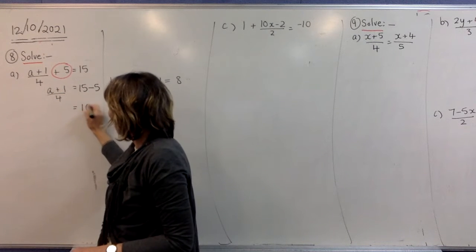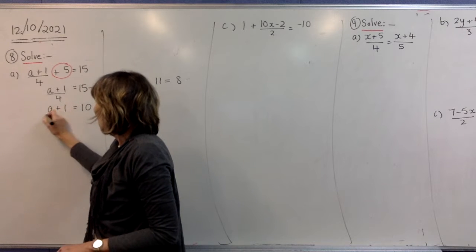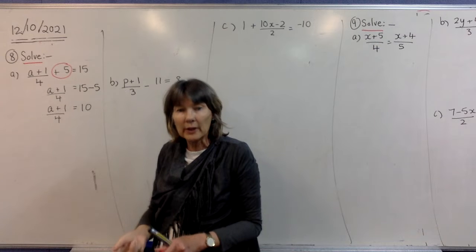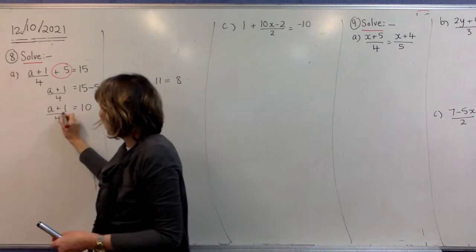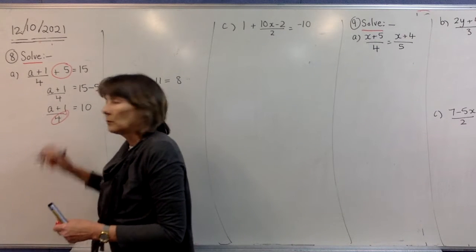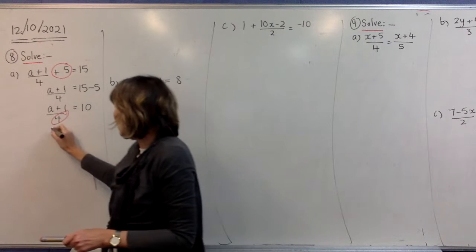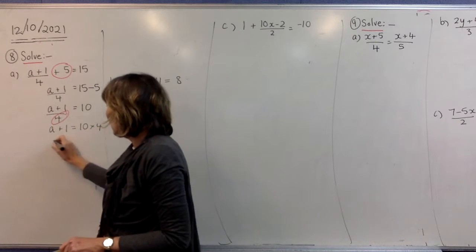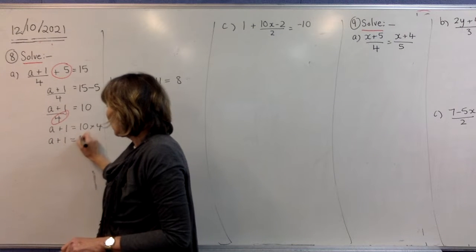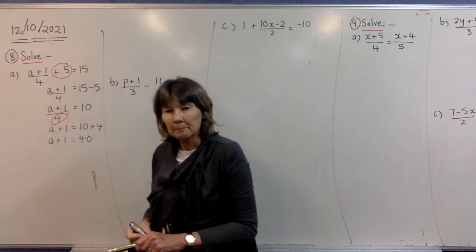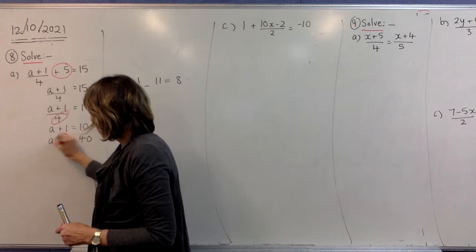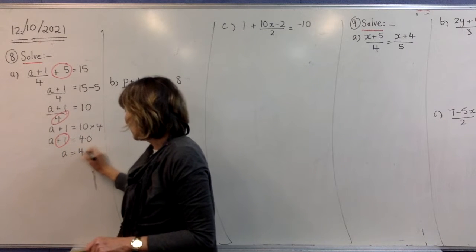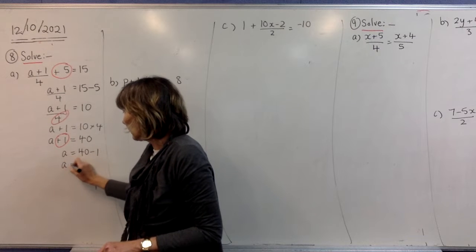So if we just keep going and collect our numbers there, this question works out fairly easily because you're just solving the equation now, getting rid of everything that's with that a. We'll get rid of the divided by 4 first, and we'll be timesing by 4 over here. That gives us a plus 1 equals 40. Now we're going to get rid of the plus 1, and we'll be minusing 1 to the other side. And now you've got your answer: a equals 39.